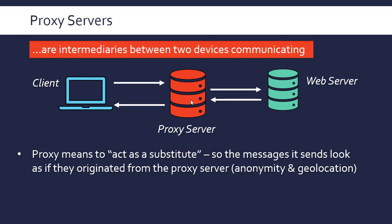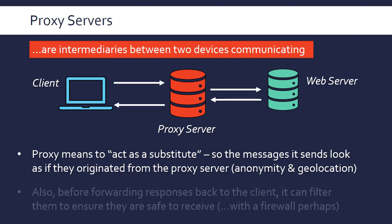Proxy servers also enable geolocation workarounds. For geo-locked services like Netflix or BBC iPlayer, you can go via a British proxy server to access UK content, because the web server sees a UK IP address and has no way of knowing you're actually in France or Spain. Services like Netflix can crack down on this by identifying and blacklisting IP addresses of commonly used proxy servers. The proxy server owner may keep changing their IP address to get around this.